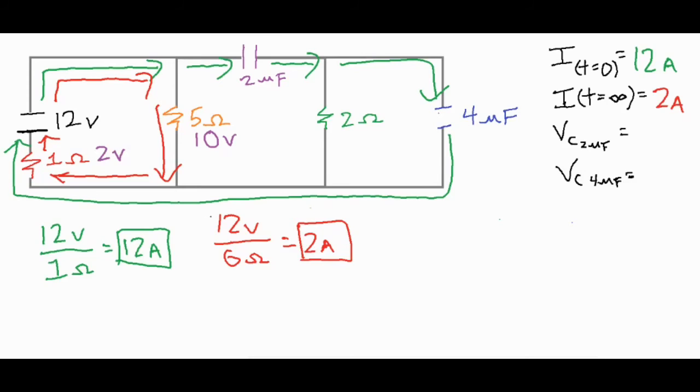So that one follows our loop rule. We leave with positive 12, we drop 10, we drop 2 more, and then the sum of the loop is 0 volts. So we want to make sure everything follows that rule, no matter what loop we take a look at.